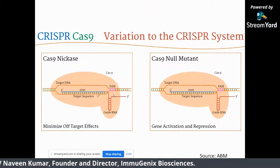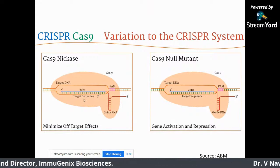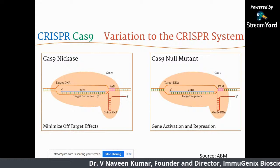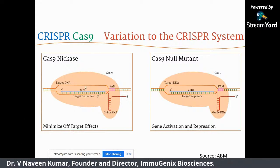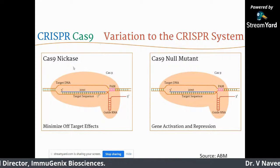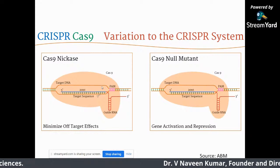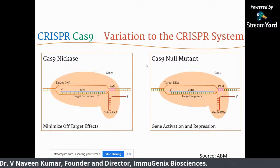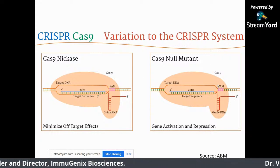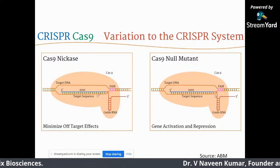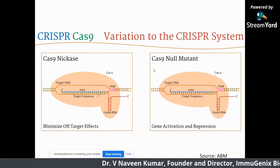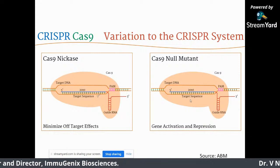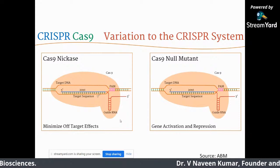In another case, they formed a null mutant where both cutting domains are inactivated — a dead Cas enzyme — so it will just bind to the specific target area without cutting. Each has its own applications. Moving on to CRISPR applications across many fields: diagnostics, gene knockout, gene knock-in, disease therapy — for example, CAR T cell therapy, cancer therapy, HIV treatment, and drug screenings. You can identify drug targets, epigenetics, agriculture, and even embryogenesis — editing genes at the embryo level itself.